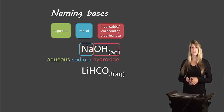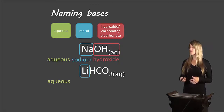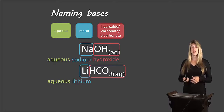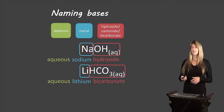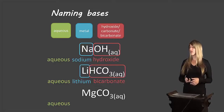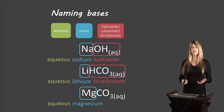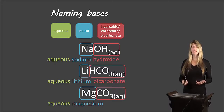Here's another example. We start off by writing aqueous. The metal is lithium, so we write lithium, and we're dealing with a bicarbonate anion, so we write bicarbonate. And one more example: again we write aqueous, the metal is magnesium, and we're dealing with a carbonate, so we write carbonate.